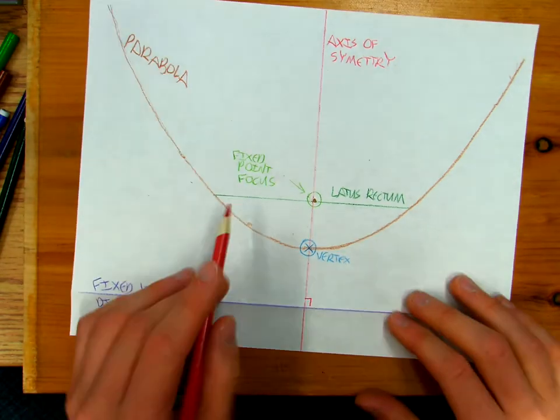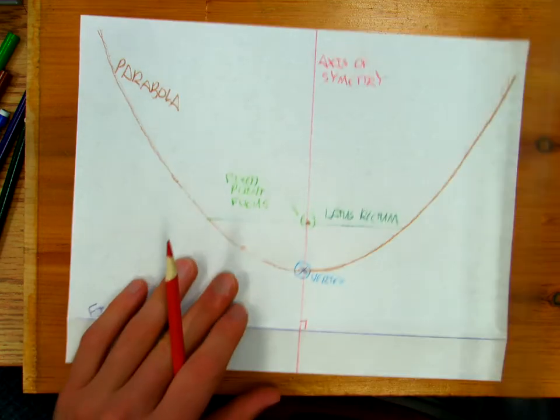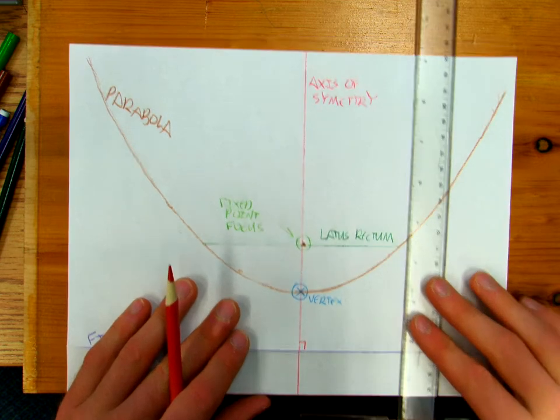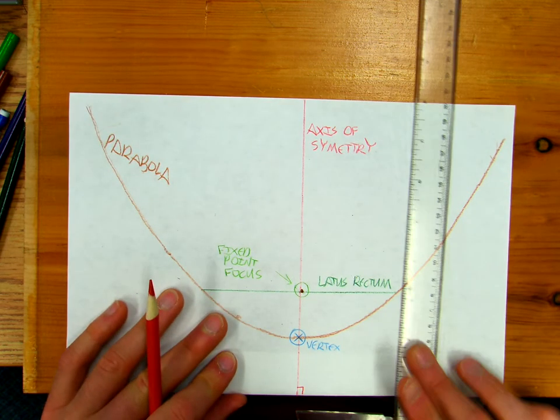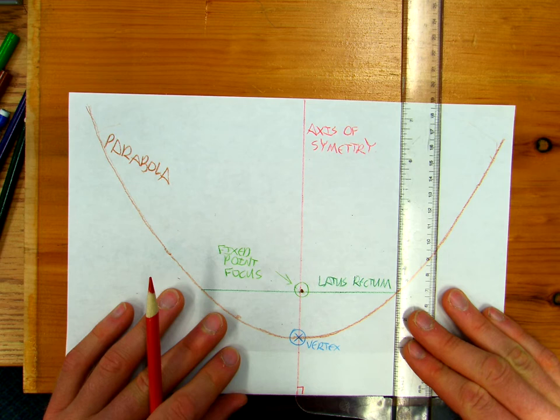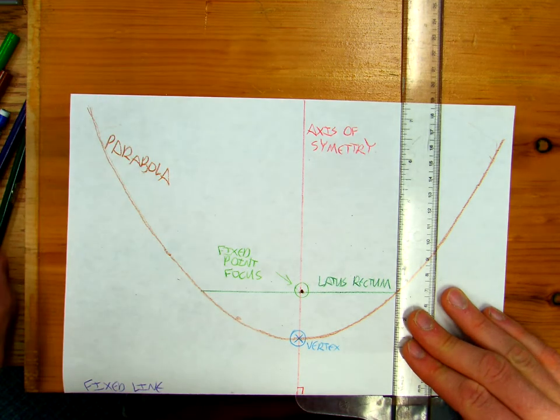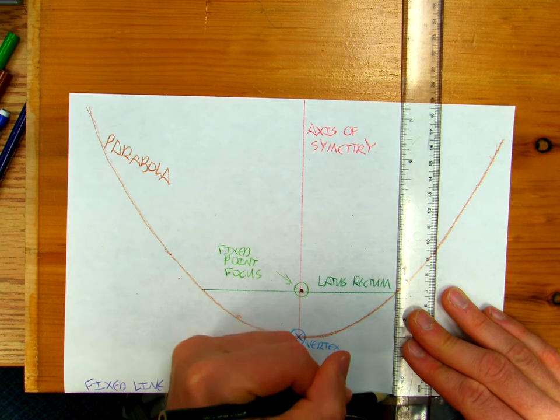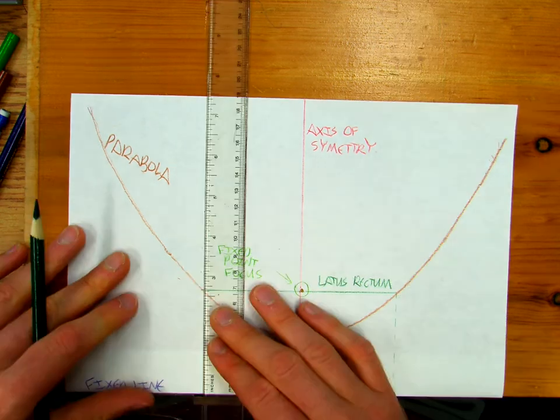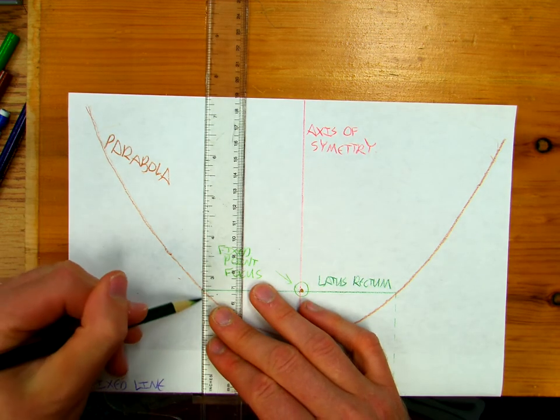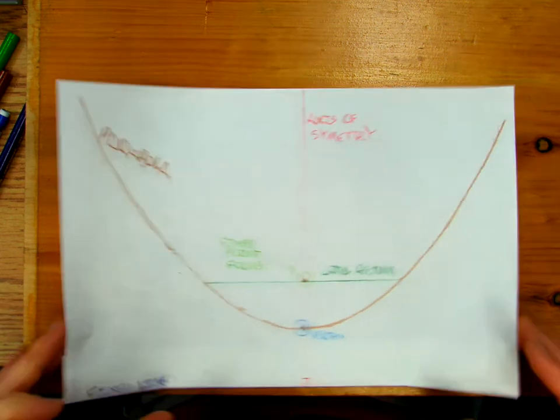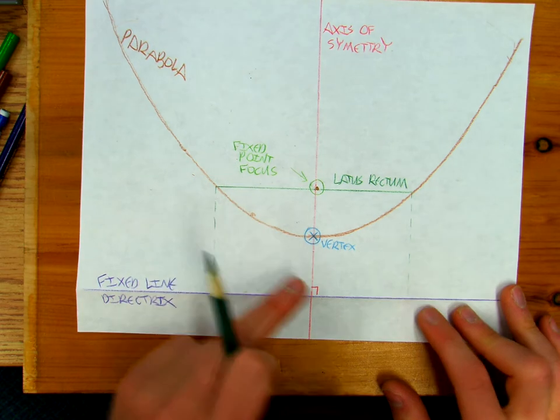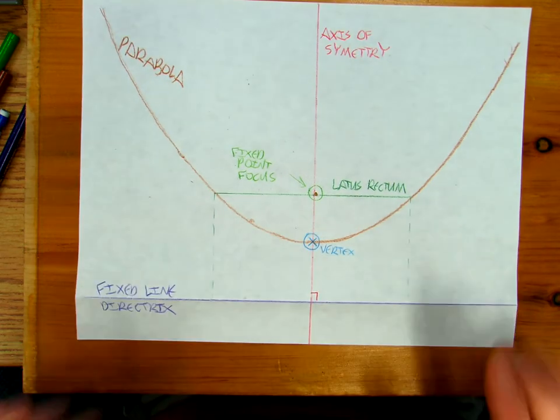Then my vertex is the point where the parabola crosses the axis of symmetry. And my latus rectum, I should probably just do it like this, basically mix a square. So this is a square and that's a square.